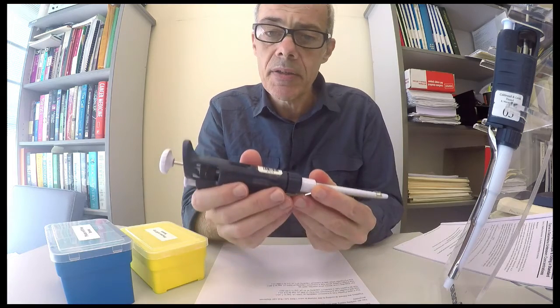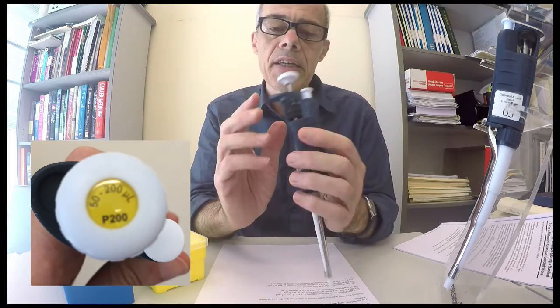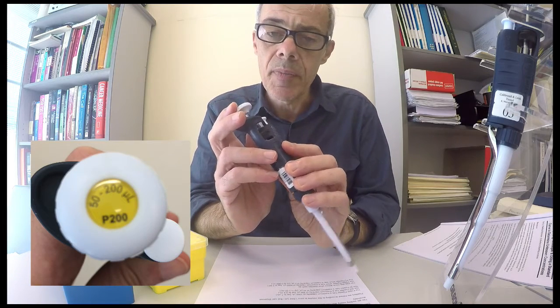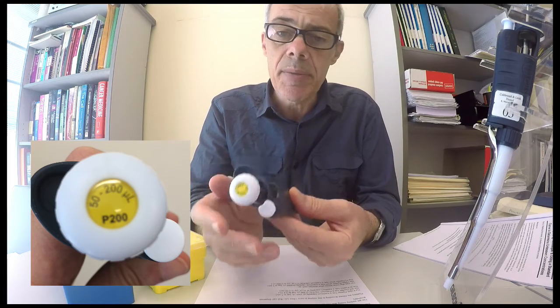This P200 can dispense 0.2 of a millilitre. So if you look at the maximum volume it can dispense, it's 200 microlitres, which is the same as 0.2 of a millilitre.